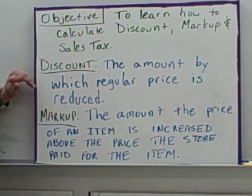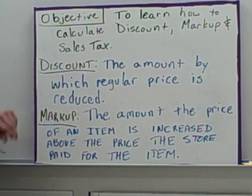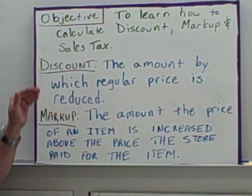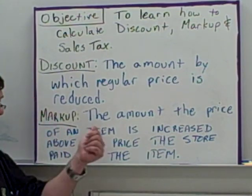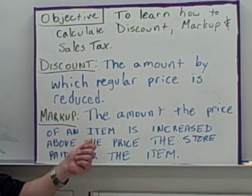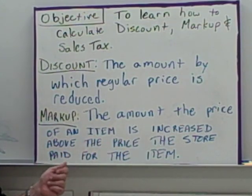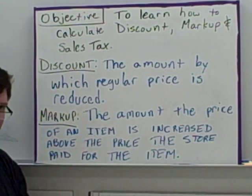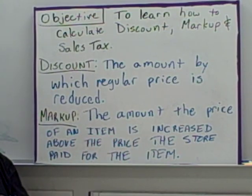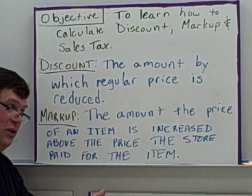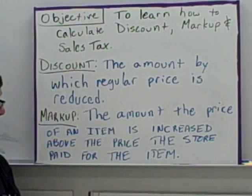Discount is the amount by which regular price is reduced. If it's reduced, it makes it smaller, which means a discount gets subtracted from the price. Markup is the amount the price of an item is increased above the price the store paid for the item. This is the part where the store makes profit. They pay so much, they charge you more, they make a profit.